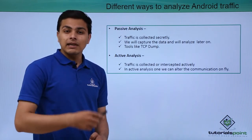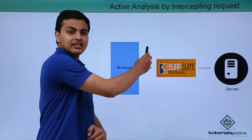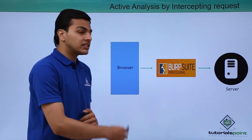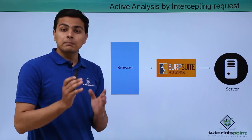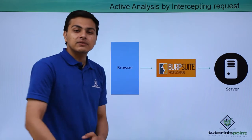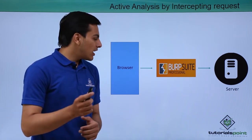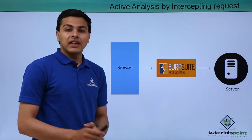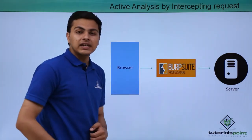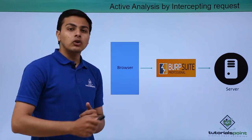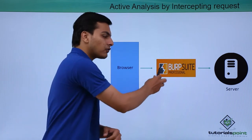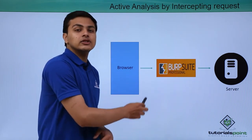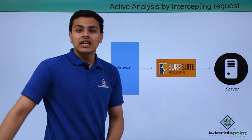In active analysis we gather the data actively or on the fly. The main advantage of active analysis is that we can intercept the request on the fly. Here is our browser and here is our server, and we are using one tool as a proxy or middleman — that is Burp Suite. Burp Suite is one of the most popular proxy tools used by security researchers. For example, if in our browser we open tutorialspoint.com, the HTTP request will first pass to our Burp Suite proxy, where we can see or modify the request, then forward it or drop it.